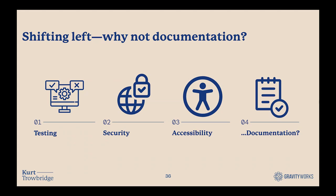We hear about shifting left a lot in the industry when it comes to things like testing and security — making sure those practices are acknowledged and considered as early and as often in the process as we can. We do this with accessibility as well, ensuring that early in the project and throughout, we're talking about plain language, color contrast, and other design considerations. I've been thinking lately: why not also do that with documentation? Ensure we bring it into our process as early as we can and then revisit it and let it grow as often as we can.